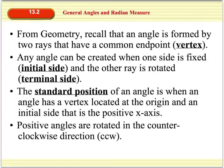If you think back from when you were in geometry, recall that an angle is formed when two rays have a common endpoint, and that common endpoint is what we call the vertex. Any angle can be created when one side is fixed, and that fixed side is what we'll call the initial side, and the other ray is actually rotated around that fixed side, and the side that's being rotated is what we call the terminal side. When we have a fixed side with a terminal side and the vertex is actually located at the origin, this is what we call an angle that is in standard position.